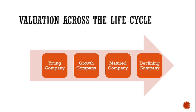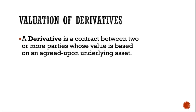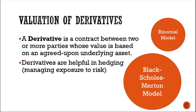In this course, we will include discussions on valuing companies and their stocks at different stages of the cycle. Also included is the valuation of derivatives. A derivative is a contract between two or more parties whose value is based on an agreed-upon underlying asset. Derivatives are helpful in hedging — that is, managing exposure to risk. A popular example is options, and we will use techniques like the binomial model and the Black-Scholes-Merton model to value such derivatives.